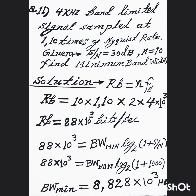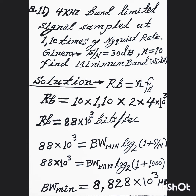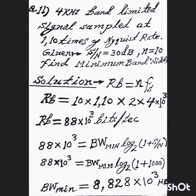Bit rate Rb equals n·fs. So Rb equals 10 multiplied by 1.1 multiplied by 2 multiplied by 4 multiplied by 10 raised to the power 3, which gives Rb equal to 88 multiplied by 10 raised to the power 3 bits per second.